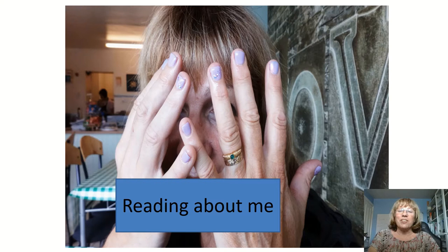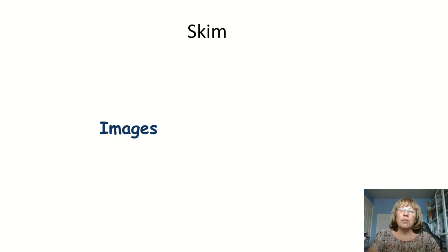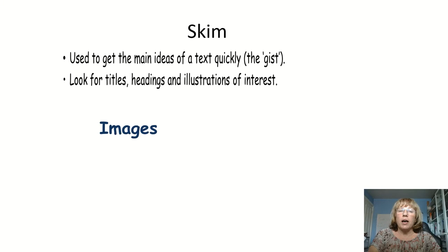Let's have a look at some photographs to see what information you can find out about me. So what skills are we going to use? Let's just recap. Skimming — can you remember what that means? Yes, it's something you do with your eyes to get the main ideas of the text. What about images? Yes — to get the point across quickly and easily.